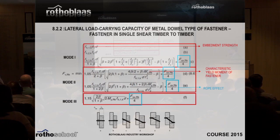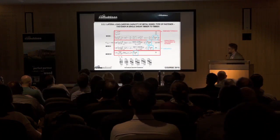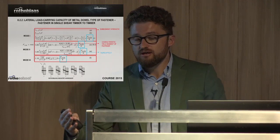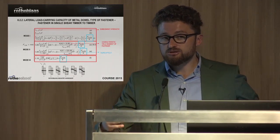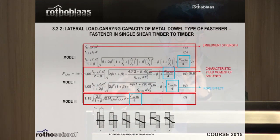At the beginning it seems very complicated, but nowadays all producers can provide you the final resistance of the screw, and software also. The rope effect in the formula is quite important — it is like an addition to the shear behavior of the screw because the thread part can compress together the elements and add to the final shear contribution.